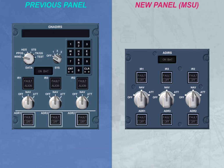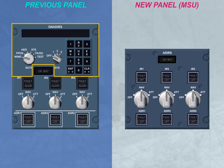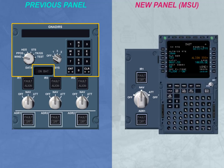The most visible difference between these panels is the deletion of the keyboard and related display from the MSU. This means that when using the MSU, IR system final alignment is only possible via the MCDU position insertion.